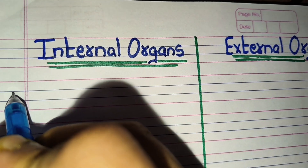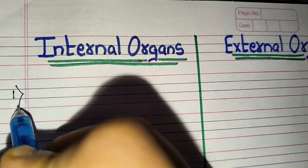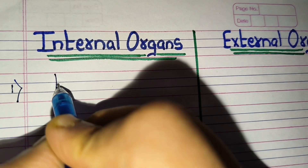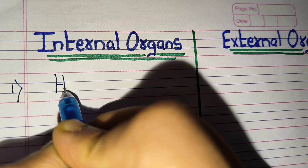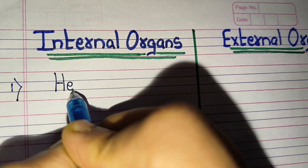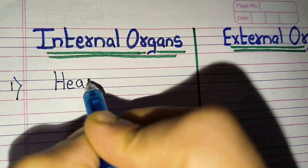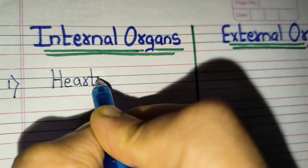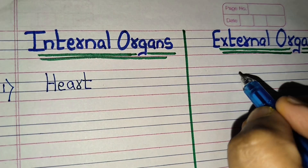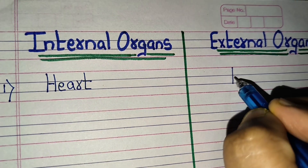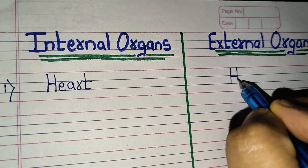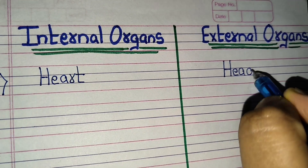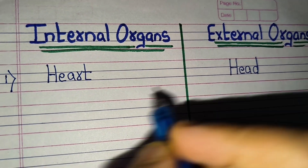Hello friends, welcome to Triyankush Learning Channel. Today we are going to learn 10 internal organs names and external organs names. So let's start. First internal organ is heart.